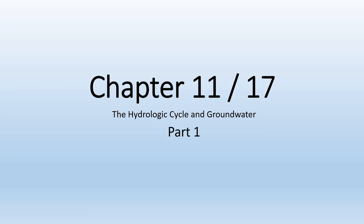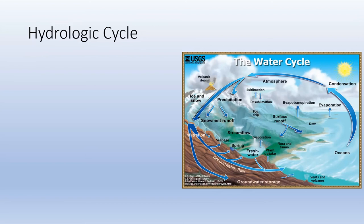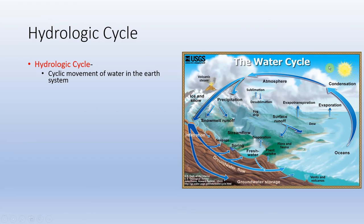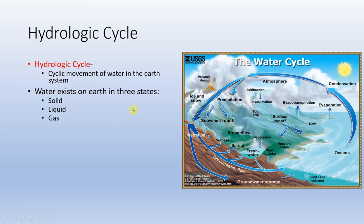The hydrologic cycle is the cyclic movement of water in the Earth's system — evaporation, condensation, precipitation, surface runoff, groundwater, and all that. It's important to remember that water is one of the few substances on Earth that exists as three of the four states of matter at natural temperatures and pressures: solid, liquid, and gas.